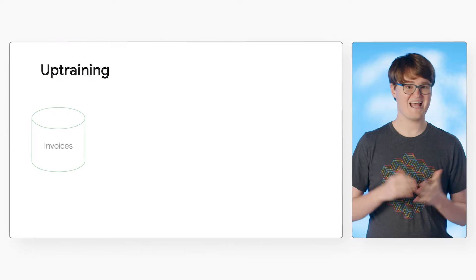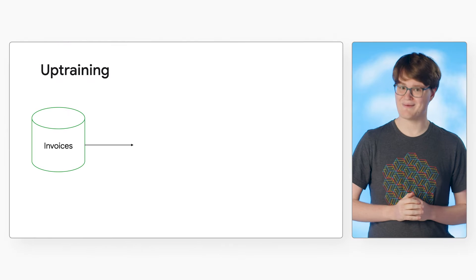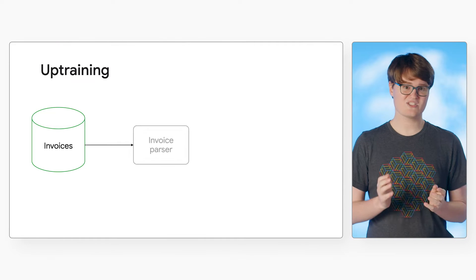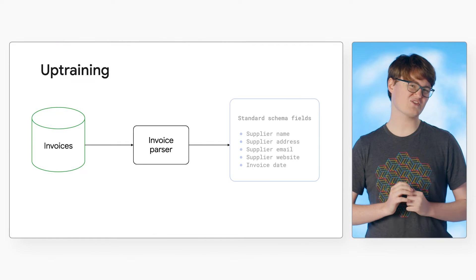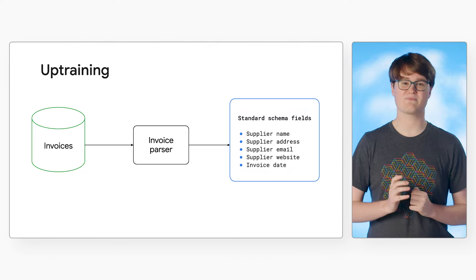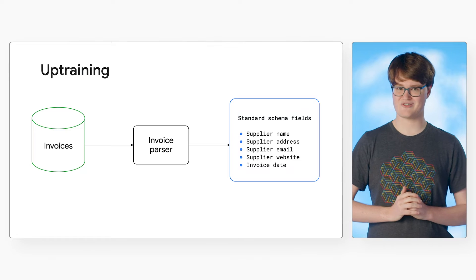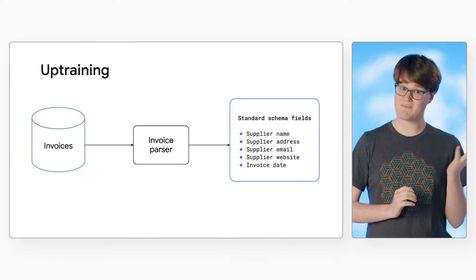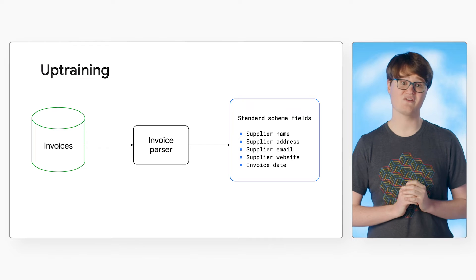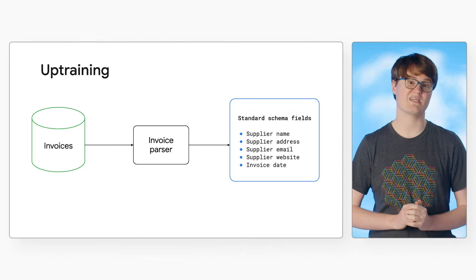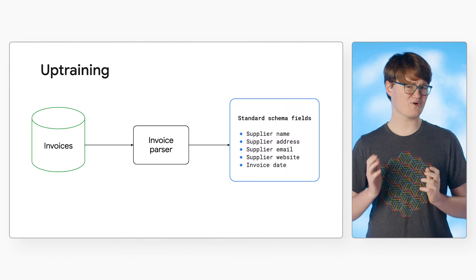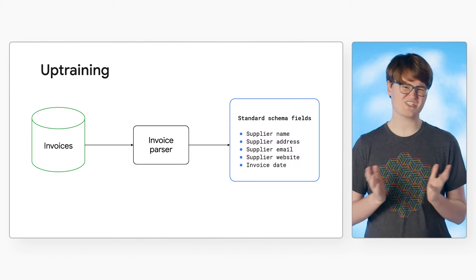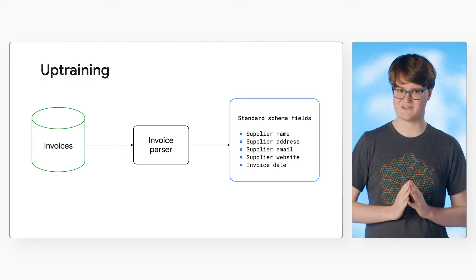This works very similarly to AutoML with Vertex AI. Let's start with up-training. Suppose you have a document format that's very similar to one that has a pre-trained processor, but just doesn't work the way you want out of the box. Maybe it has custom fields that aren't detected by the pre-trained processors, or the processor output just isn't as accurate as you'd like.